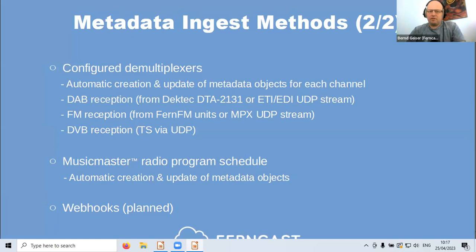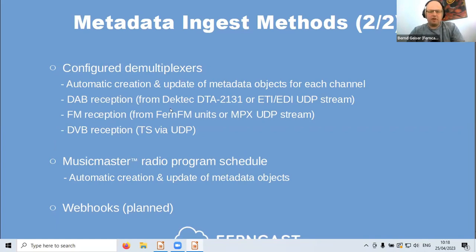There are more sources to grab metadata from. One is the demultiplexing feature — in our system you can configure demultiplexers mainly for radio reception from various standards: DAB, FM, or DVB. These demultiplexers automatically create and update metadata objects for each channel they receive, and you can reuse these metadata objects for outgoing streams easily. For DAB reception we support a DAB card or a UDP stream with EDI format. For FM reception we have our own hardware unit, the FanFM, or as a future plan an MPX stream to extract RDS.